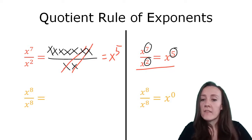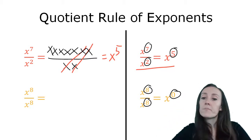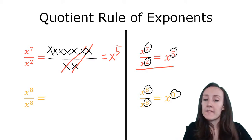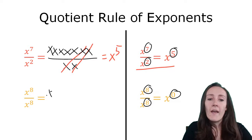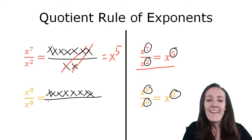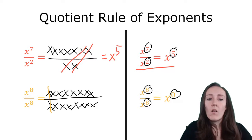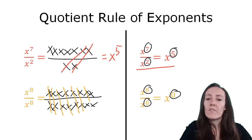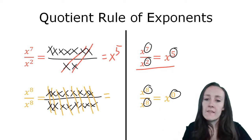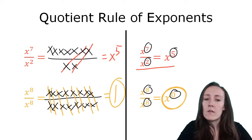If you do the same thing with x to the eighth divided by x to the eighth, the quotient rule of exponents says that it should equal x to the zero, because anything minus itself does equal zero — so eight minus eight equals zero. If you expand it out, you're going to have eight x's on the top and eight x's on the bottom as well. When you cancel all of those out, every single one of those divided by themselves is going to equal one. So you're going to get one times one times one — eight times — which just equals one. And that's another reason that x to the zero equals one.